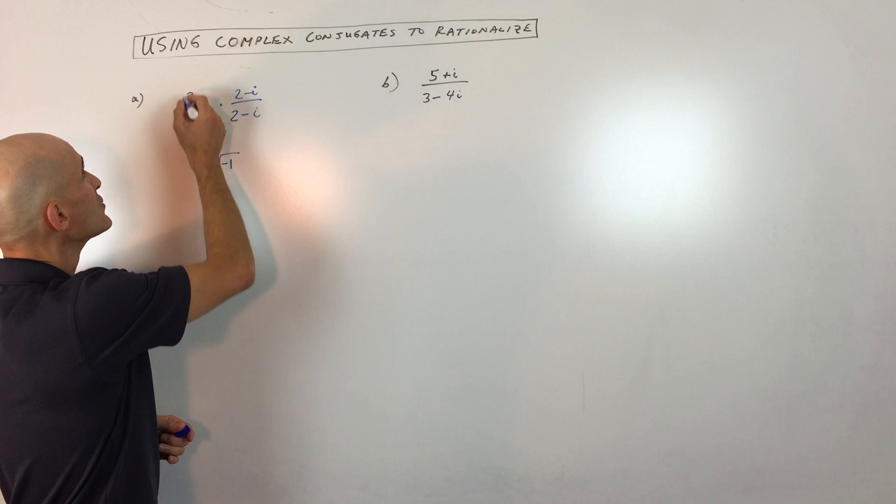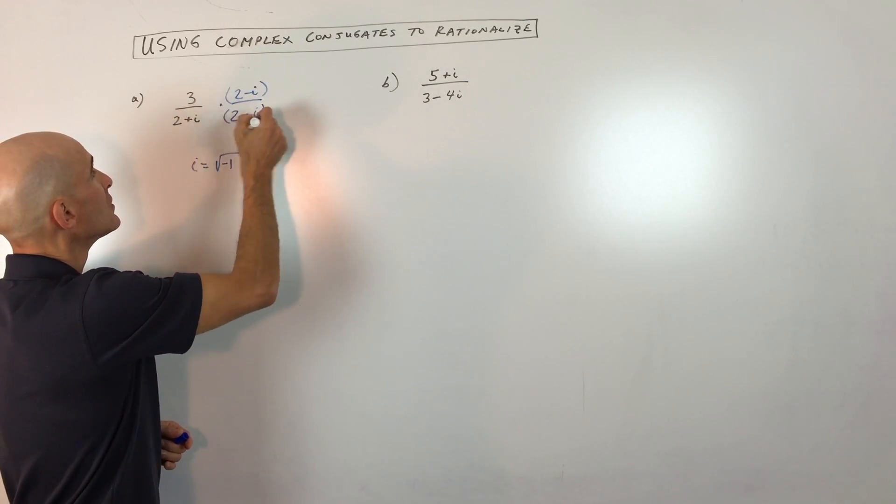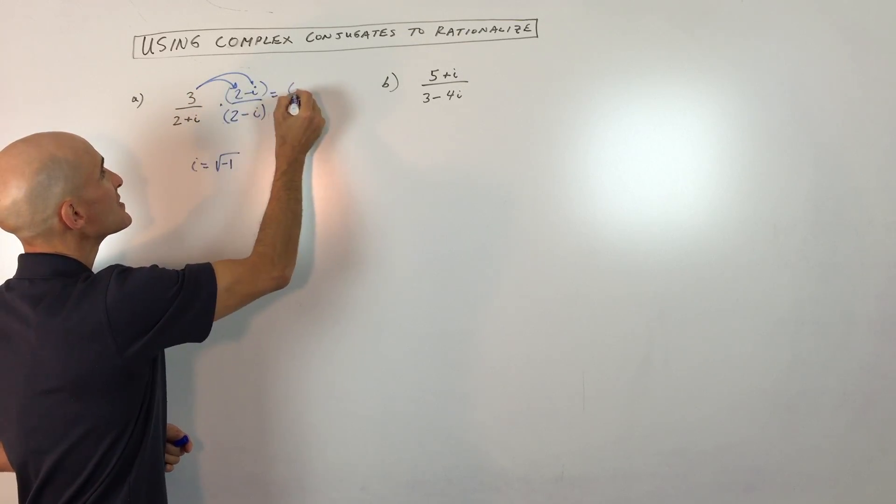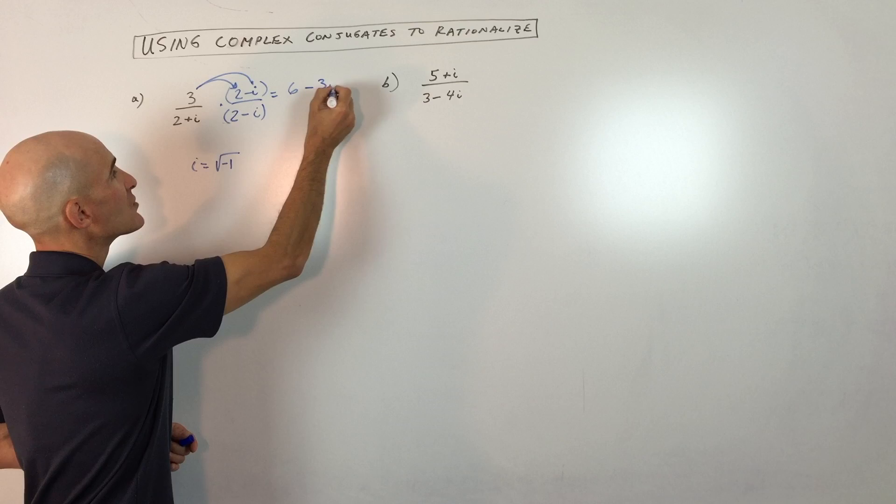So what we're going to do now is we're just going to distribute the three. So that's going to give us three times two is six minus three times i, which is three i.